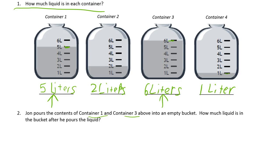So we're just going to add the two together. We can have a little number bond here just so we can RDW this as we should. We're adding, so we have container 1 which was 5 liters and container 3 which was 6 liters.